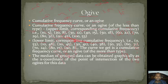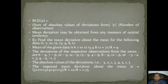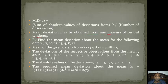Now coming to mean deviation. Mean deviation is basically the sum of absolute values of deviations from a measure of central tendency, divided by the number of observations. Mean deviation may be obtained from any measure of central tendency. We will see two types: mean deviation about the mean and mean deviation about the median.